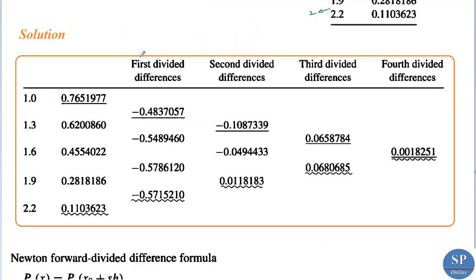We have the divided difference table with x values and f values — f(x0), f(x1), f(x2), f(x3), and f(x4). So we have five values, meaning our interpolating polynomial will be p4(x). The corresponding f values are f(1), f(1.3), f(1.6), and so on up to f(2.2).